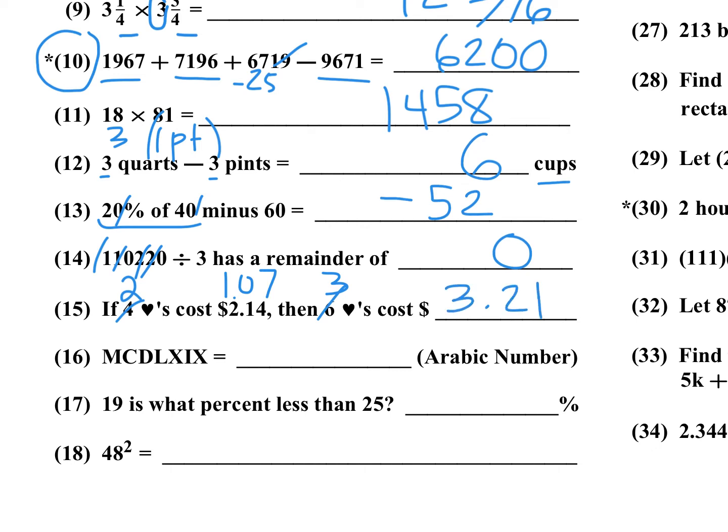Number 16: we have a Roman numeral and we want to convert that to Arabic numbers. MCDLXIX. M is a thousand. C before D, D is five hundred, so C before D you subtract a hundred from five hundred, so you're gonna have 1400. So I have a thousand, four hundred, and then I have LX, that's 60, 50 plus 10. IX is a 9, so 1469.